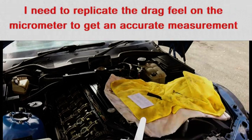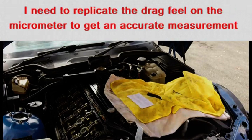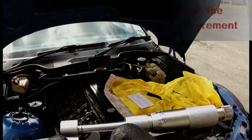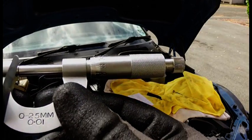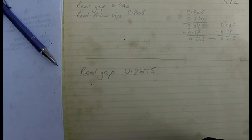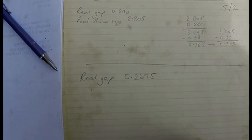This is the approximate reading on the micrometer for the 0.25 feeler gauge. 0.2675, I tend to work in quarter divisions. Make a note of that, the real gap is 0.2675.